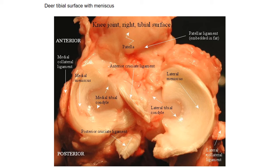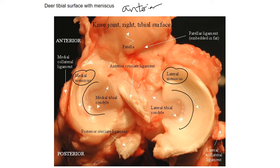Here's a deer tibia — the tibial plateau as it's called. Anterior is up here. We're looking at the meniscus where the condyles of the femur are going to sit in. We have a lateral and a medial meniscus, and you can see the C-shape for both of those. They've cut away the PCL and ACL, but you can see the ACL attaches to the anterior part of the tibia and the posterior cruciate ligament attaches back here to the posterior part of the tibia.